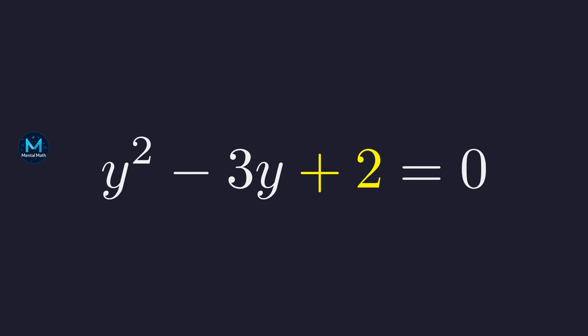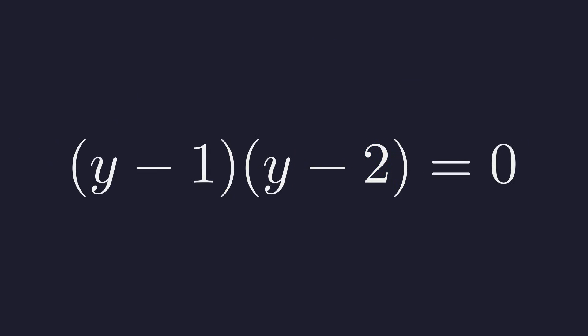This quadratic can be factored. We are looking for two numbers that multiply to positive 2 and add up to negative 3. The numbers that satisfy these conditions are negative 1 and negative 2. This gives us the factored form.